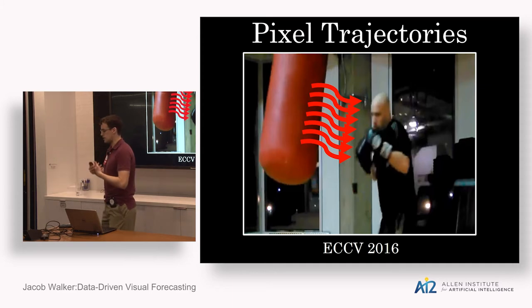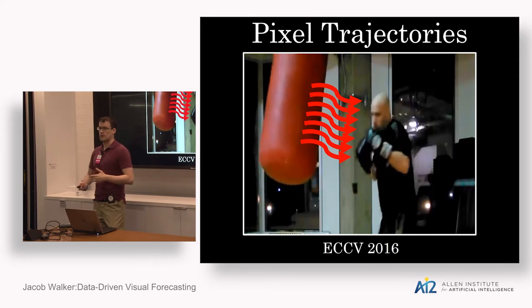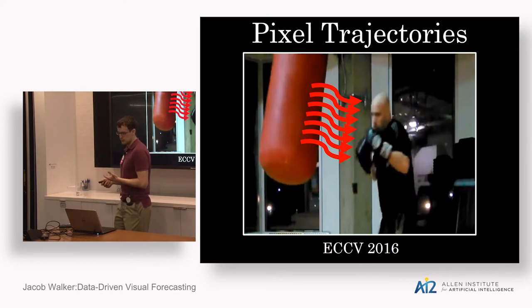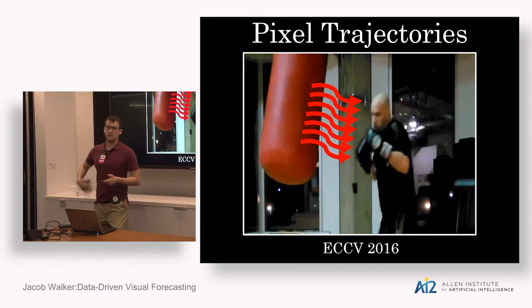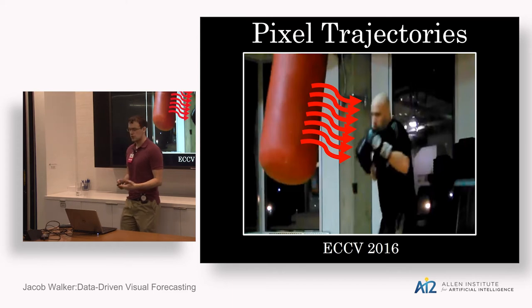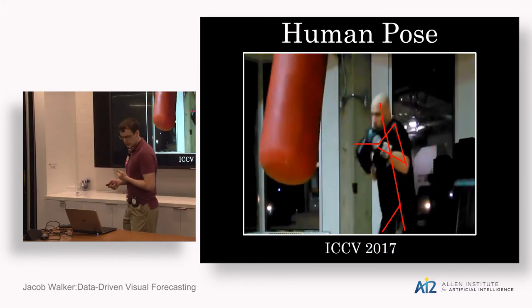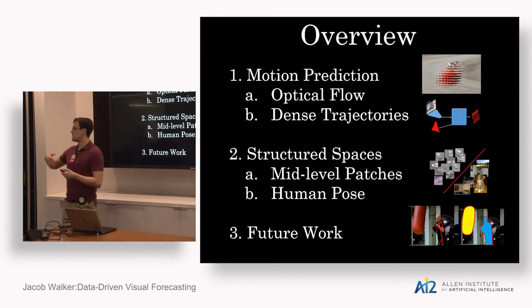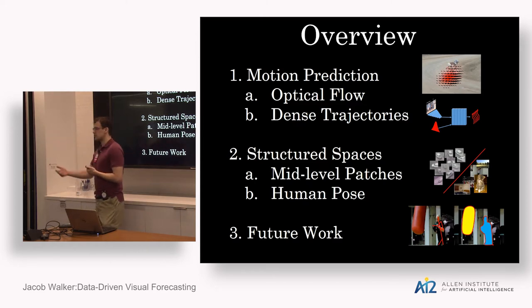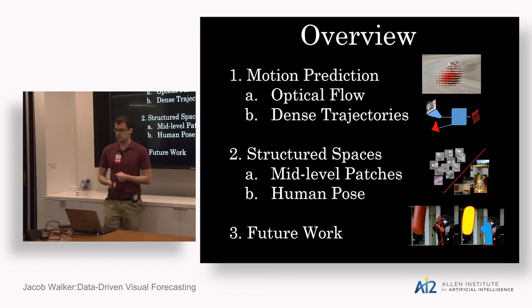But pure pixel motion is not the full story — it doesn't model things like occlusions of objects, the appearance of new objects, or changes in the geometric pose of an object. Ideally, we'd like to think about forecasting in a state-space representation, where the image is in a particular state and we want to forecast future states. Since it's hard to do that with pixels alone, we could use intermediate representations. I'll discuss the use of mid-level patches and human pose as intermediate representations for forecasting. So in a nutshell: pure pixel motion prediction first, then intermediate representations, then possible future directions.